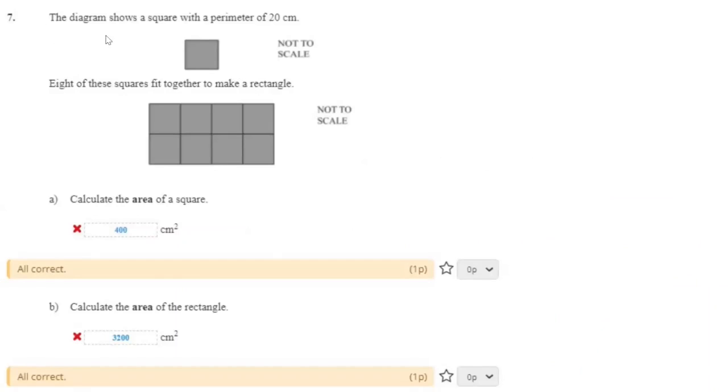All right, question 7. The diagram shows a square with a perimeter of 20 cm. Eight of these squares fit together to make a rectangle.